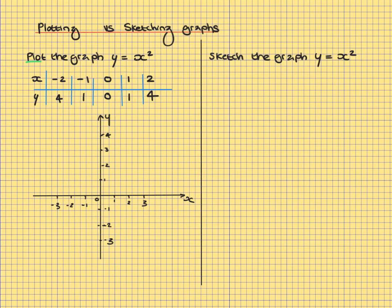We need to make sure we plot the points accurately. So negative 2, 4, negative 1, 1, 0, 0, 1, 1, and then 2, 4.